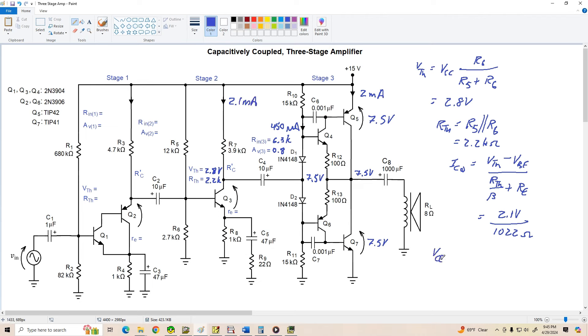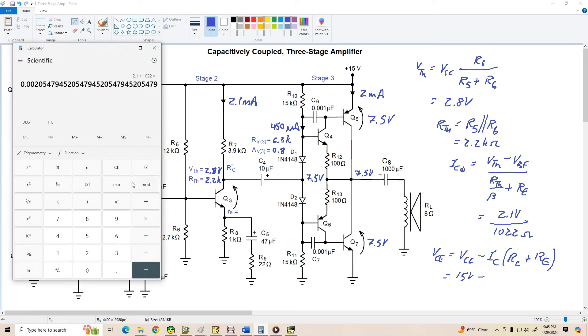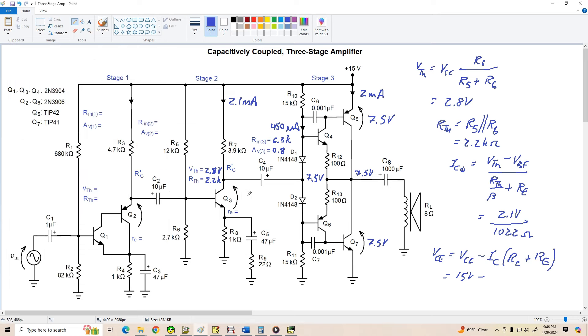VCE is equal to VCC minus IC times RC plus RE. So we've got 15 volts minus 2.1 milliamps times 4.9k. 0.0021 times 4900 minus 15, we get a VCE of about 4.7 volts.